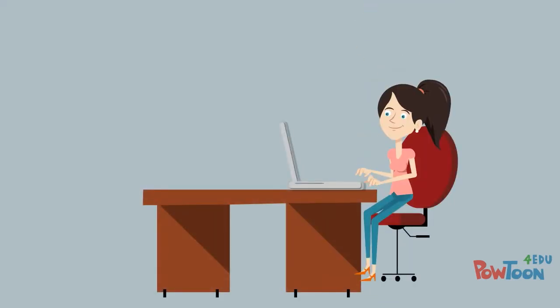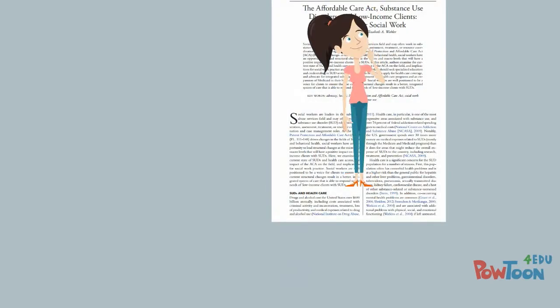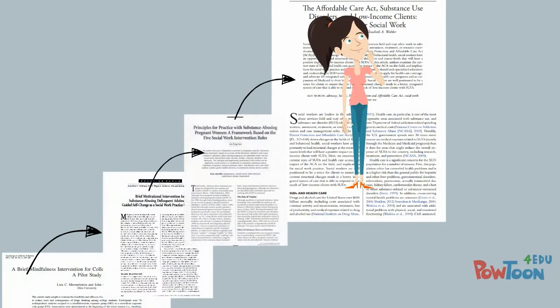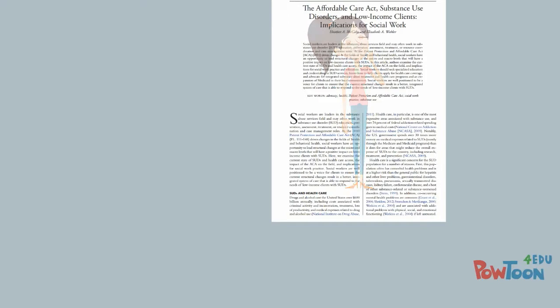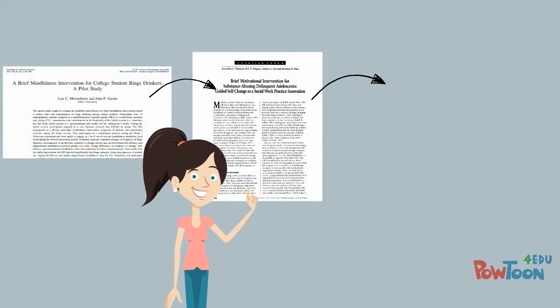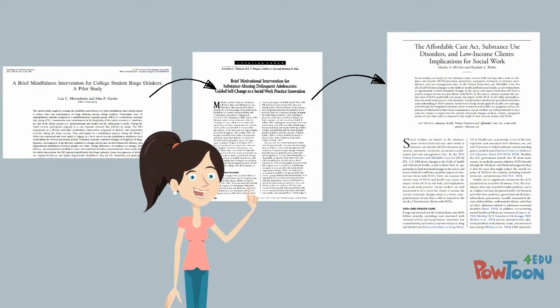When she writes an article describing her research, she includes citations for all of the previous studies that she reviewed. In doing so, she shows not only how her research is building on the previous research, she is also showing how her work is different from that previous research. She is demonstrating that she found a gap in the research, a question that had not yet been answered, and she is using her own research to fill in that gap.